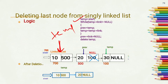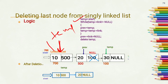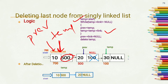Now temp is at the first node and temp->link is not equal to null, so the condition is true. We set previous equal to temp, meaning previous is now pointing to the node pointed by temp. Then we move temp to temp->link, which contains 500, so temp moves to that node.